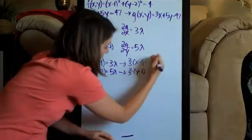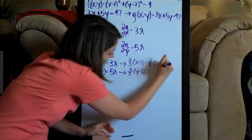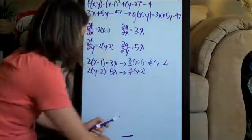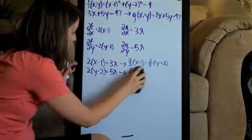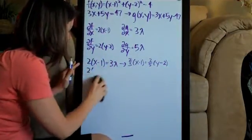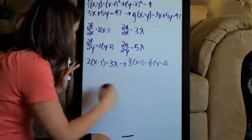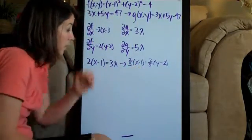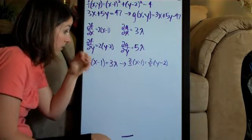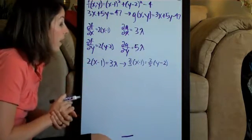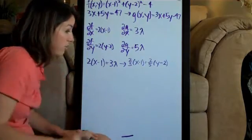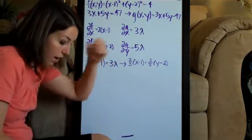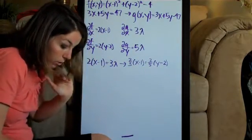I'll put 2 fifths times y minus 2 up here. Now we just simplify this so that we have a relationship between x and y. We can solve for either x or y, it doesn't matter.